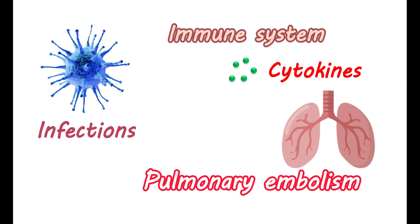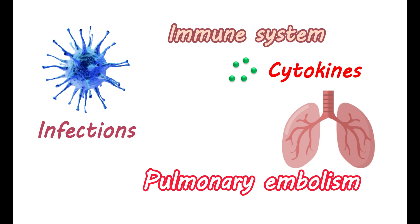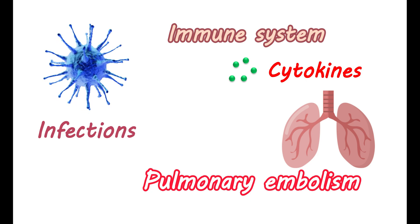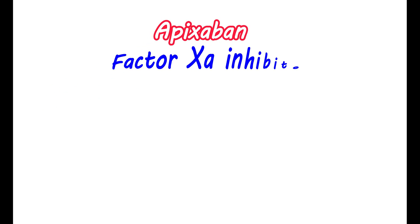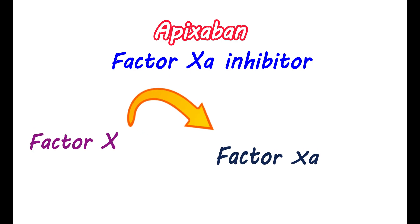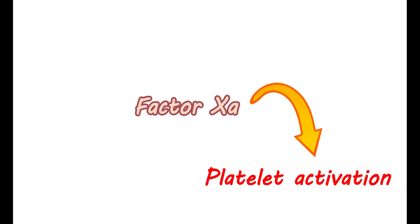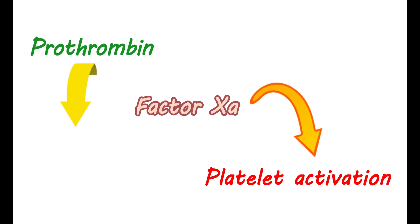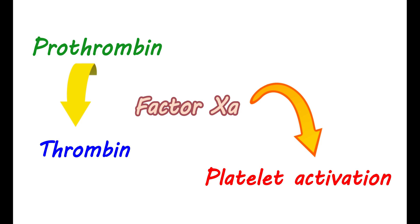Apixaban can be given to prevent as well as treat both deep vein thrombosis and pulmonary embolism. Apixaban is a factor Xa inhibitor. The coagulation cascade mainly depends on the activation of factor X to factor Xa via the intrinsic as well as extrinsic pathways. Factor Xa is important for platelet activation and promotes conversion of prothrombin to thrombin, which later activates fibrin.